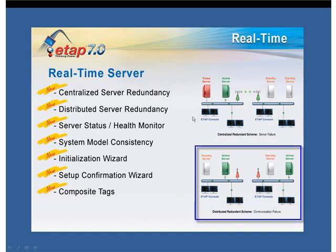Distributed Redundancy, also known as Multi-Site Redundancy, makes sure there is an active server for each site. If there is one active server for multiple sites and the communication fails between each site, ETAP will automatically assign an active server for each site, ensuring each site stays online. System Model Consistency ensures that the information being passed to the active server is also passed to the standby server, so that no information is lost if the active server is changed.